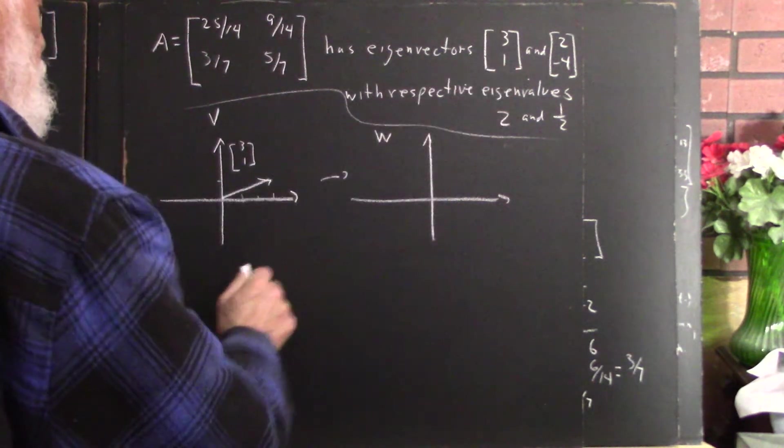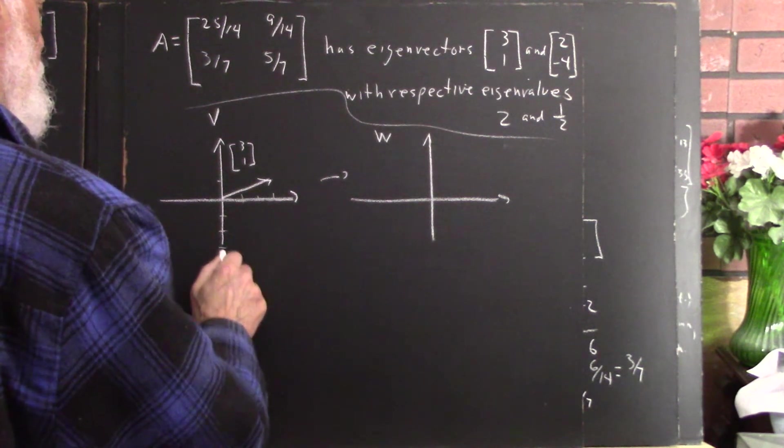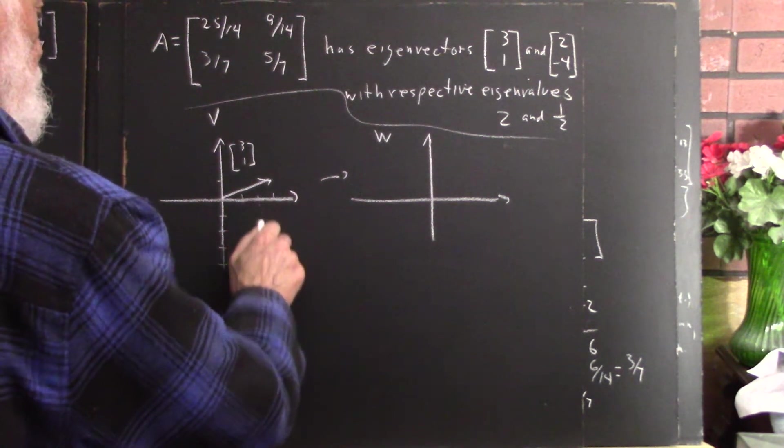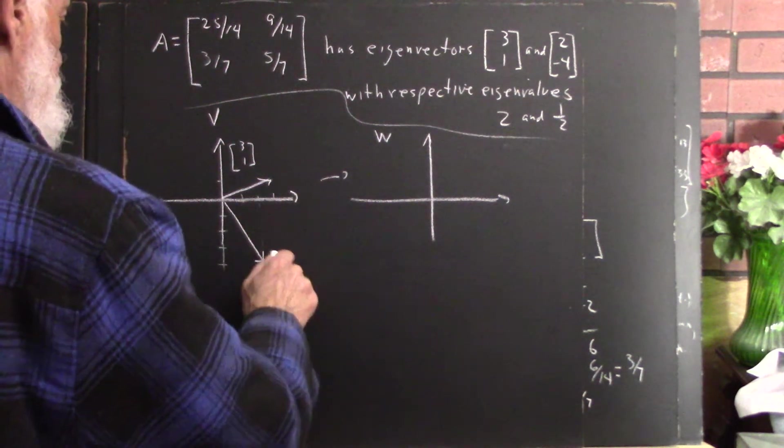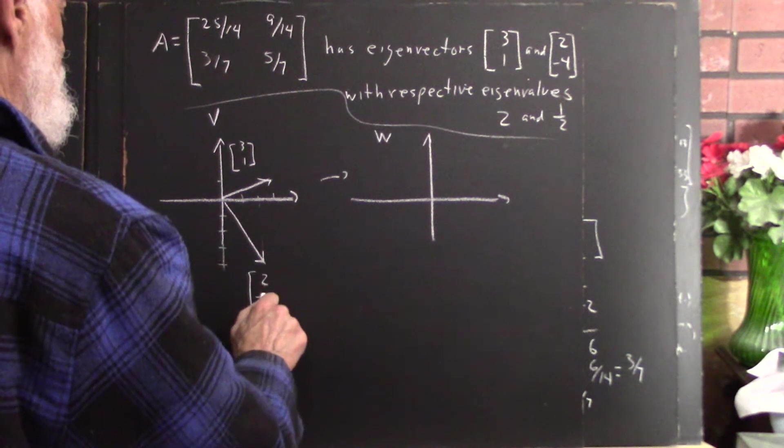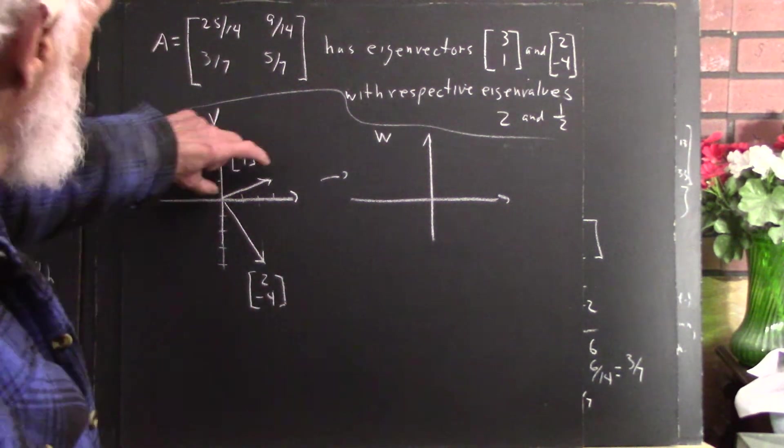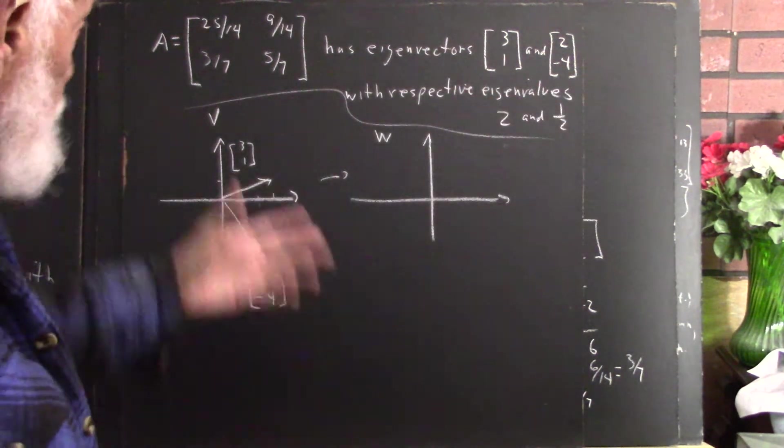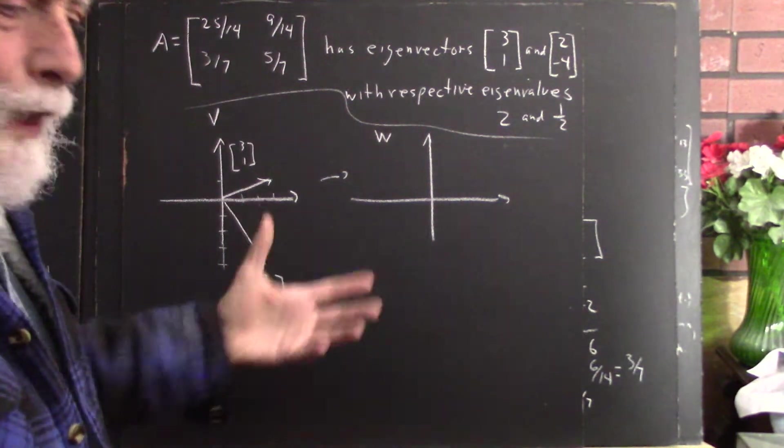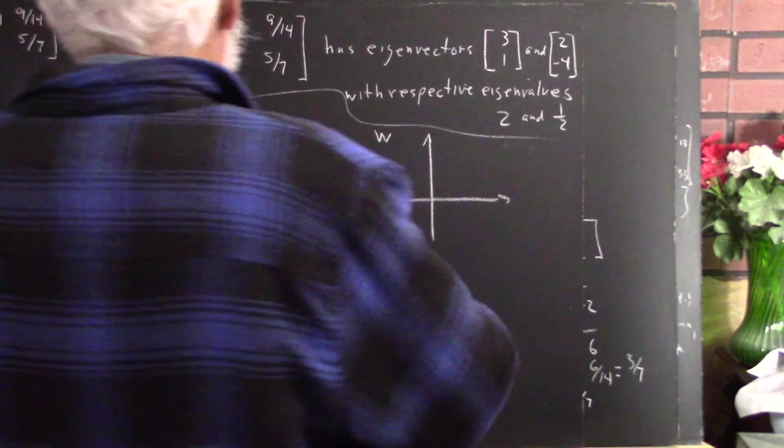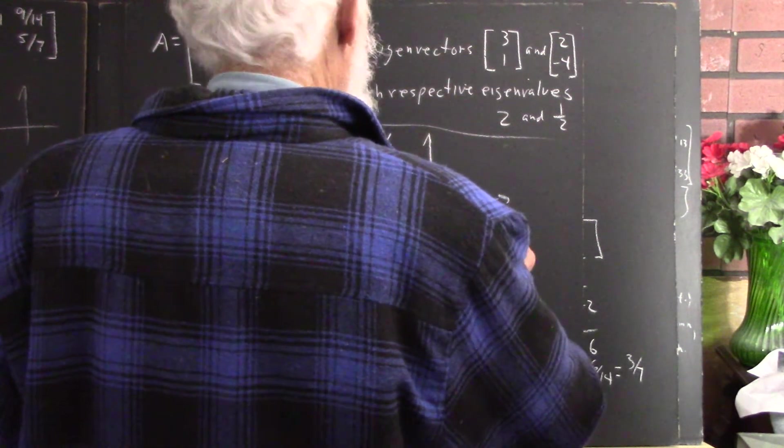And we also have vector 2 and negative 4. And we might not have seen that particular vector before, but that vector is going to look something like this. This vector is supposed to map to double this vector, and it does. Because this transformation, we've done the arithmetic, we've adjusted it, we've seen that this transformation does take the vector 3, 1 to the vector 6, 2.